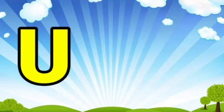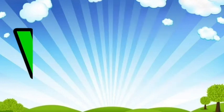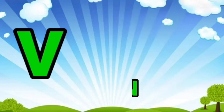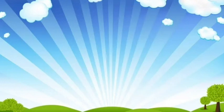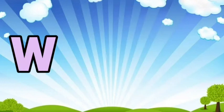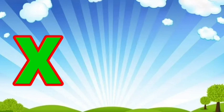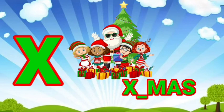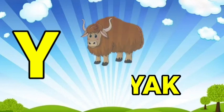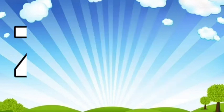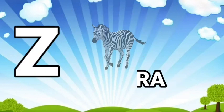U for umbrella, B for violin, W for watch, X for xmas, Y for yak, Z for zebra.